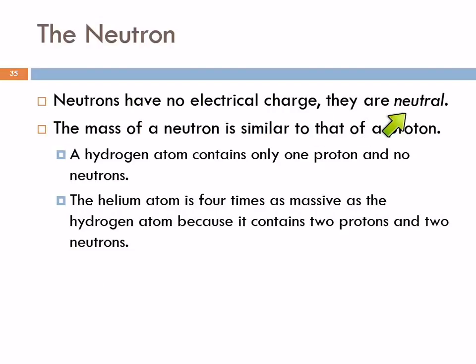Neutrons are neutral - notice they start with the same sound. Protons are positive - proton and positive both start with the letter P. The hydrogen atom has one proton and no neutrons. The helium atom has two protons and two neutrons, and that's why it's four times as massive as the hydrogen atom.